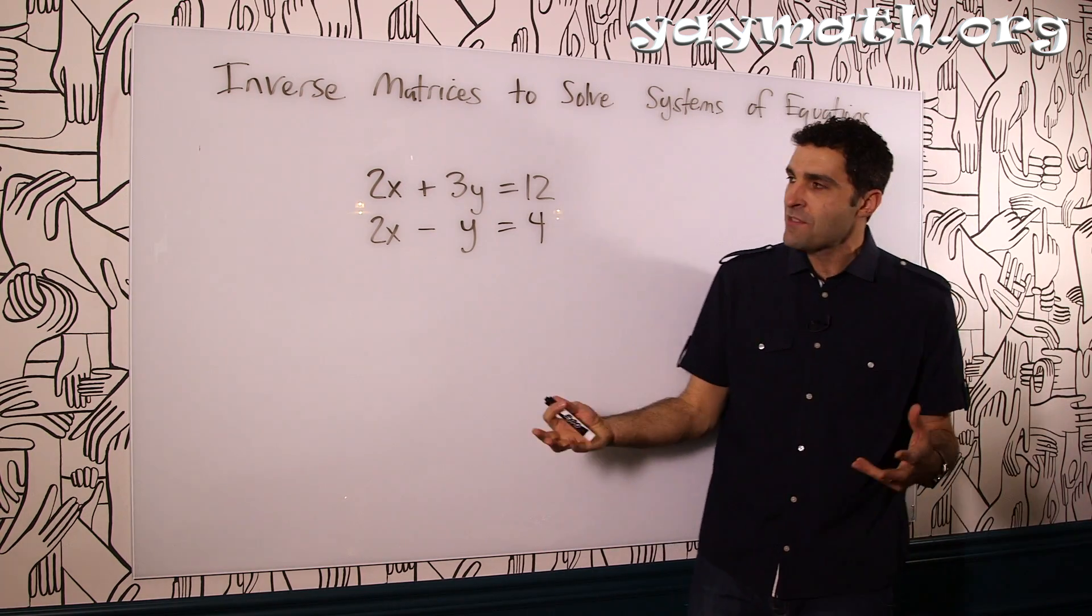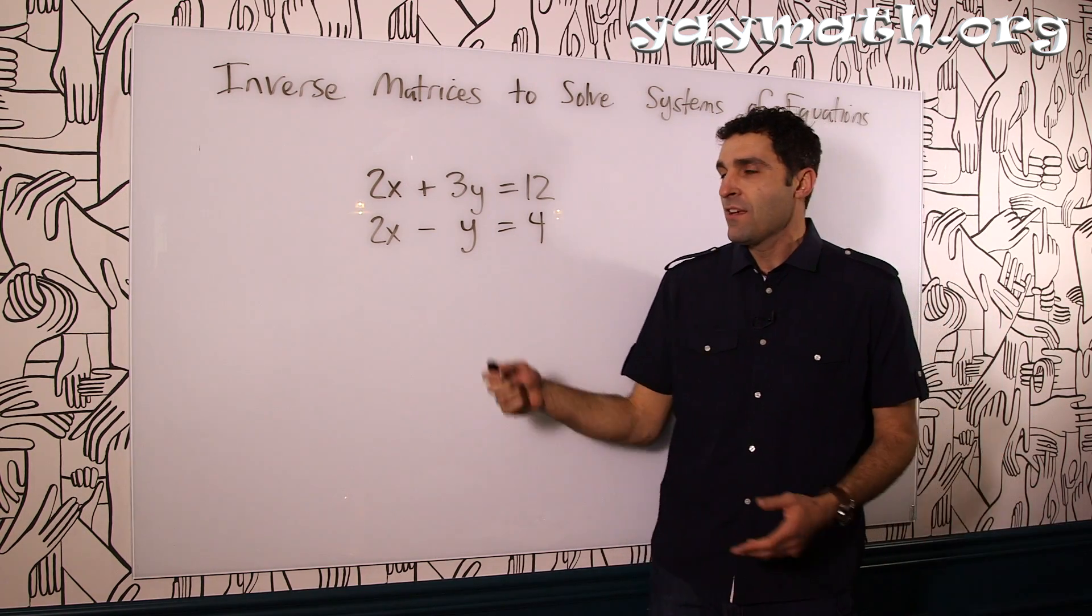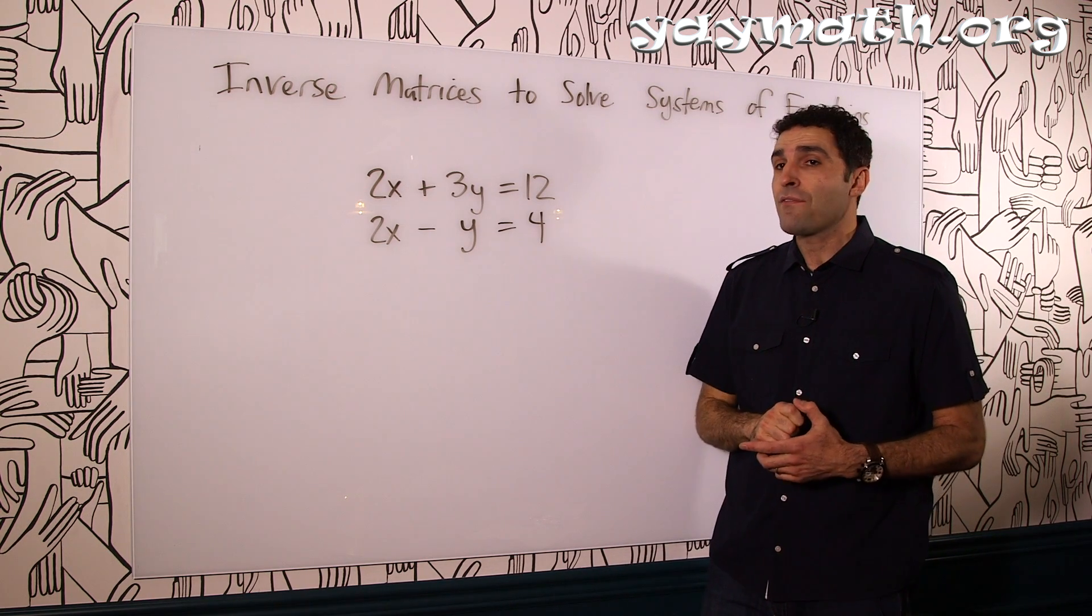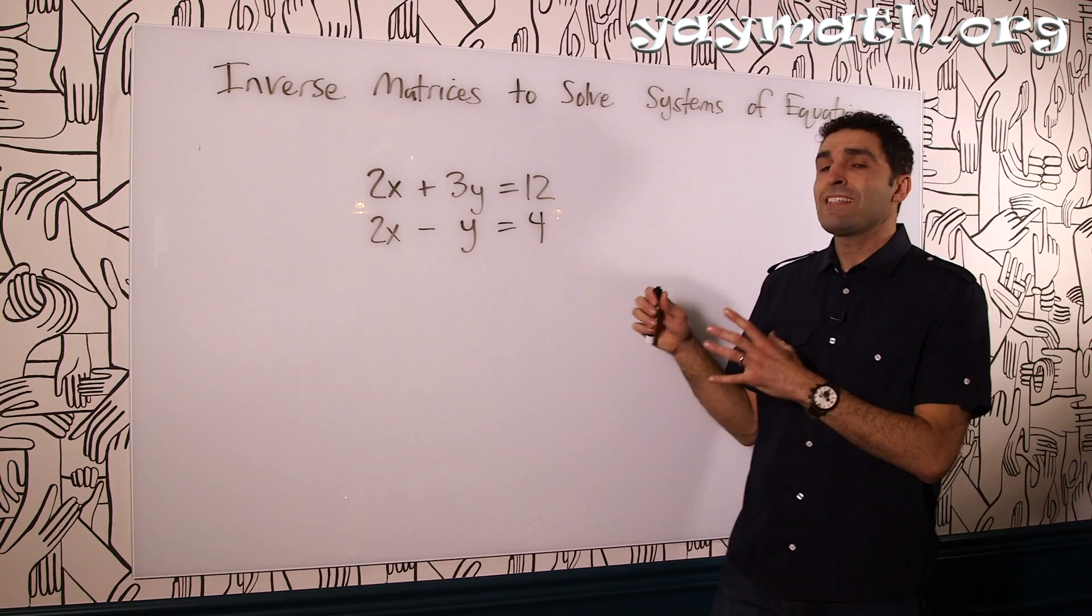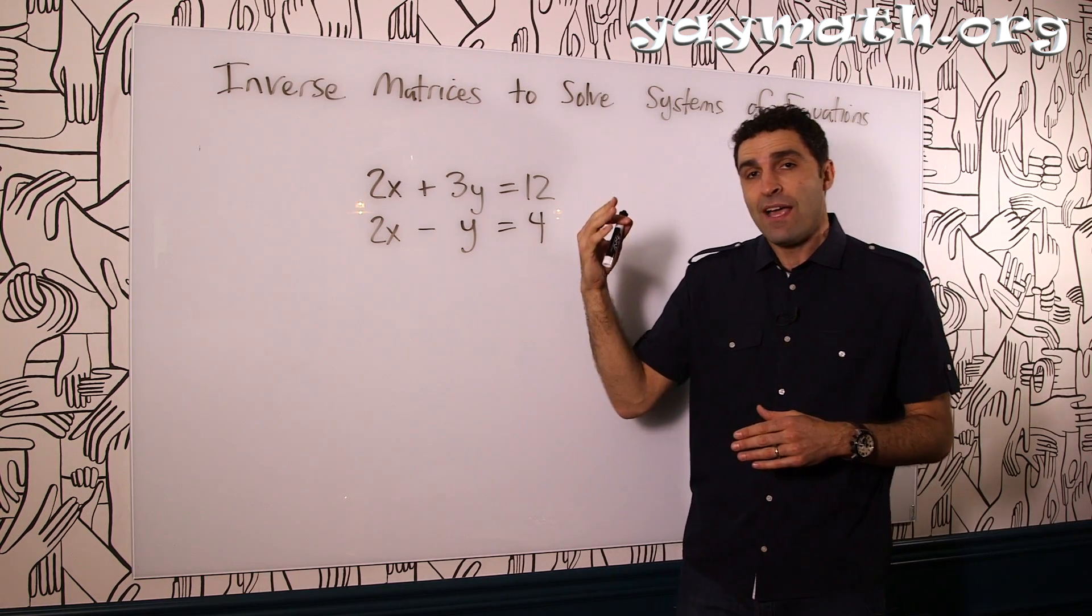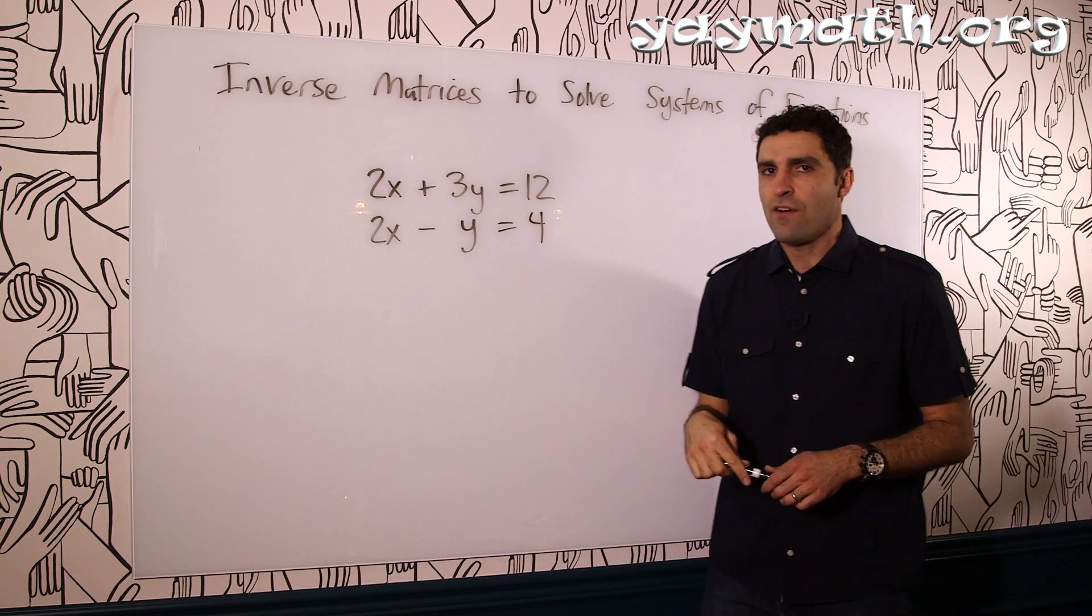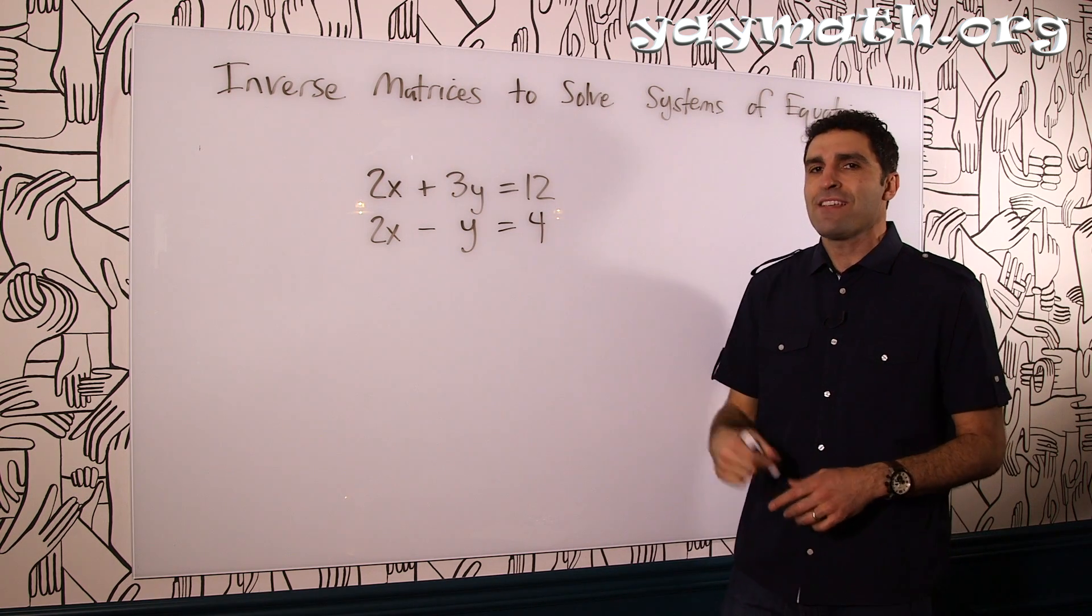So solving systems of equations, there's many ways to do it: there's the substitution method, elimination method, even graph them. I'm actually going to solve them right off the bat just so that we get an idea of what the answer is, so we can keep an eye on that while we explore using inverses to solve them next.